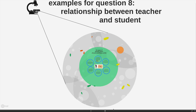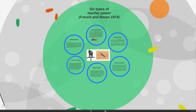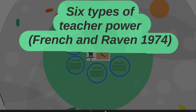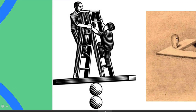Let's now look at some examples for question 8, which deals with the relationship between the teacher and students. It's a particularly fascinating area, and what I'd like to do in this section is really hone in on the dynamics of power between the teacher and students. To do that, I'm going to use French and Raven's fantastic study on the nature of power, the different types of power, and how it's used in leadership.